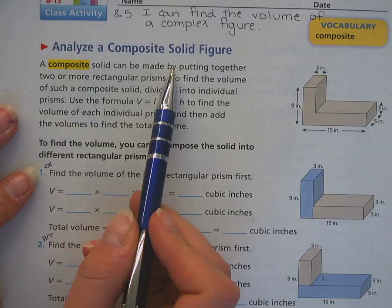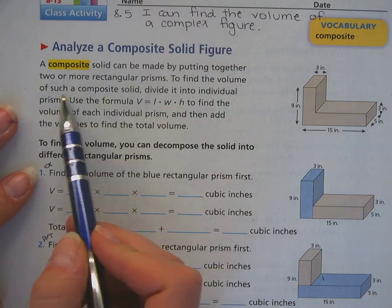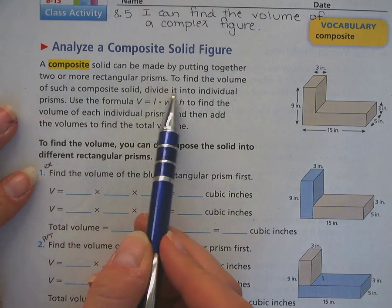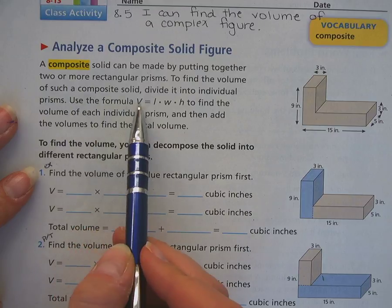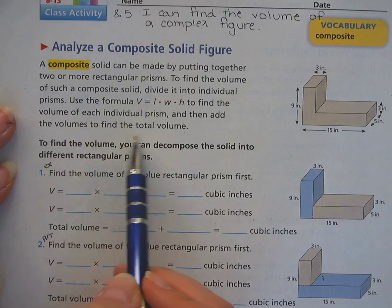A composite solid can be made by putting together two or more rectangular prisms. To find the volume of such a composite solid, divide it into individual prisms, use the formula volume equals length times width times height to find the volume of each individual prism, then add the volumes to find the total.